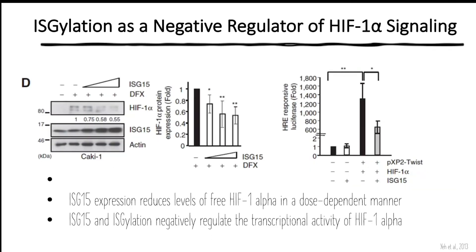ISGylation has been implicated as a negative regulator of HIF-1 signaling. As the amount of ISG15 is increased, the levels of HIF-1 decrease. Similarly, the reporter assay on the right shows decreased reporter activity in the presence of ISG15.